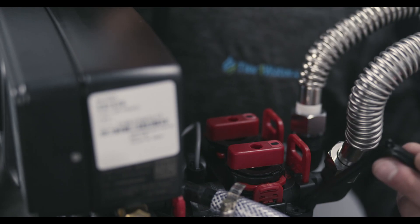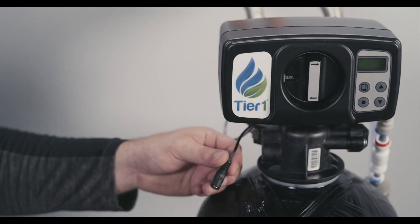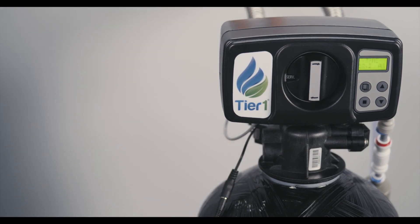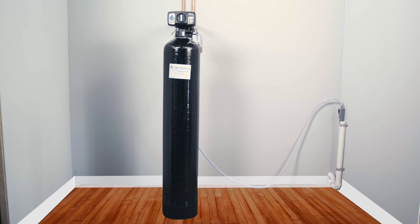Once the system flushing has completed, you're ready to plug in your control valve to start programming. Attach the power cord to the control valve and plug it in. Refer to your manual or the recommended video for detailed programming instructions. Your water filter should now be fully operational.